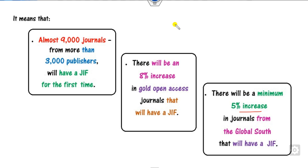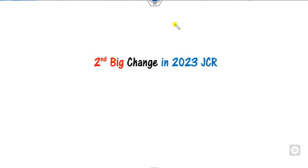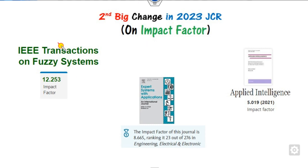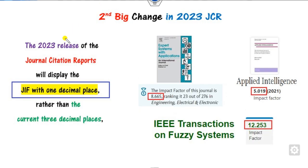The second biggest change in the JCR June 2023 report relates to the impact factor display. Currently, impact factors are shown to three decimal places — for example, 8.665 or 5.019. The second biggest change is that the JCR release in 2023 will display the impact factor up to only one decimal place. So a value like 8.665 will change to show only one decimal place, such as 8.7.